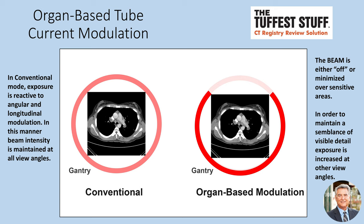The other three types include angular tube current modulation, which is tube current modulation in the X and Y plane, and longitudinal tube current modulation, which is tube current modulation in the Z-axis. The fourth type, in addition to organ-based, is ECG-based or electrocardiogram-based tube current modulation, which is tube current modulation based on some specific point in the ECG.